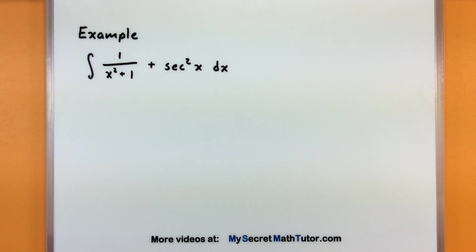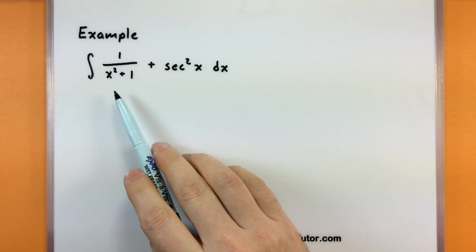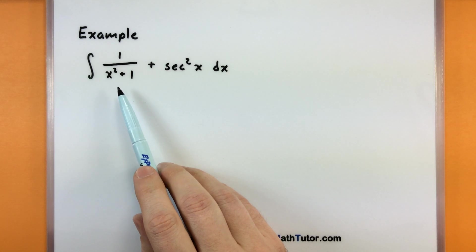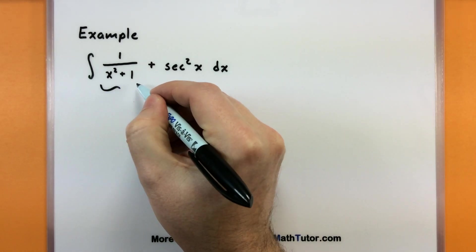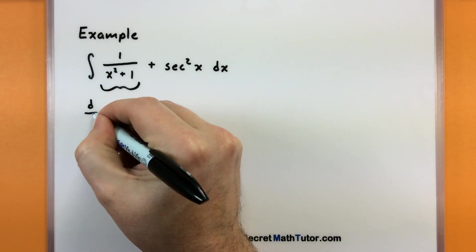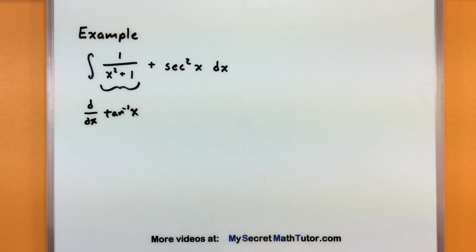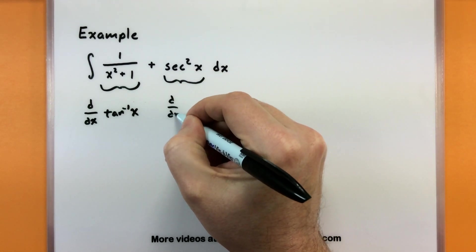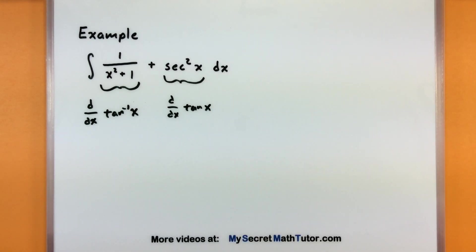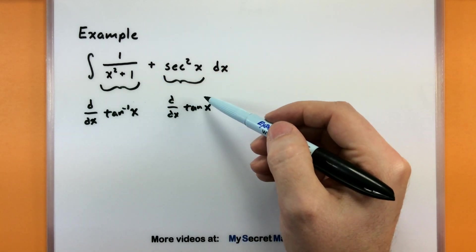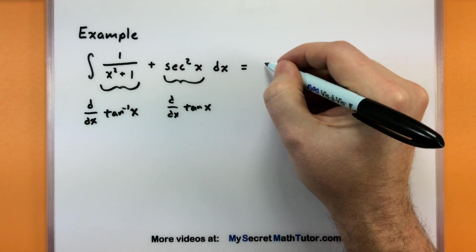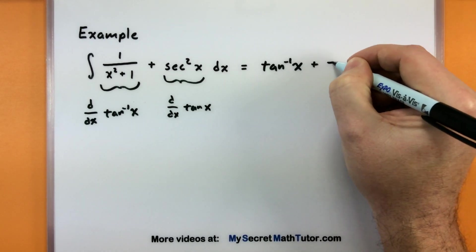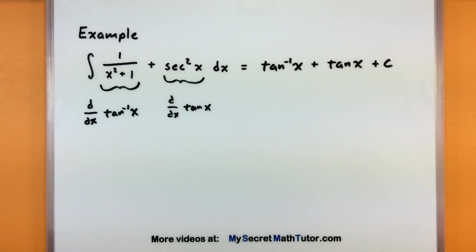This last example really shows why it's important to know all your derivatives. When first doing indefinite integrals this looks tricky — we have no rules for division and limited tools for trig functions. But the first expression is a special derivative: it's the derivative for inverse tangent. And the second expression is the derivative of regular tangent — tangent's derivative is secant squared. Since indefinite integrals work backwards, these give us arctan plus tangent plus C. Even though it looks scary, it's all about knowing your derivatives.